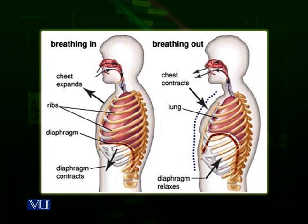So these two processes actually help inhalation. After air is filled in the lungs and exchange occurs, the process of exhalation begins. What happens in exhalation? The muscles of the ribs relax. When the muscles of the ribs relax, the chest cavity — the rib cage — moves downwards.